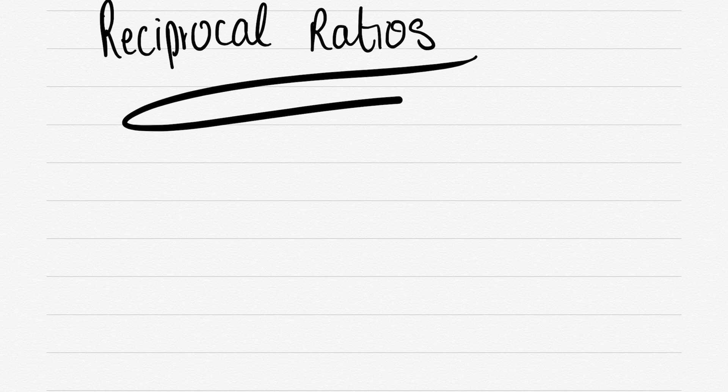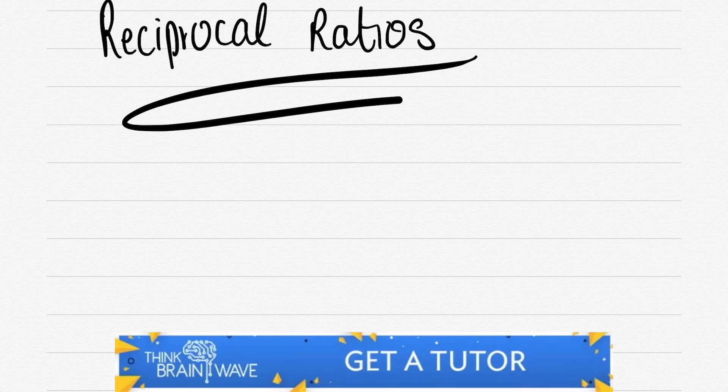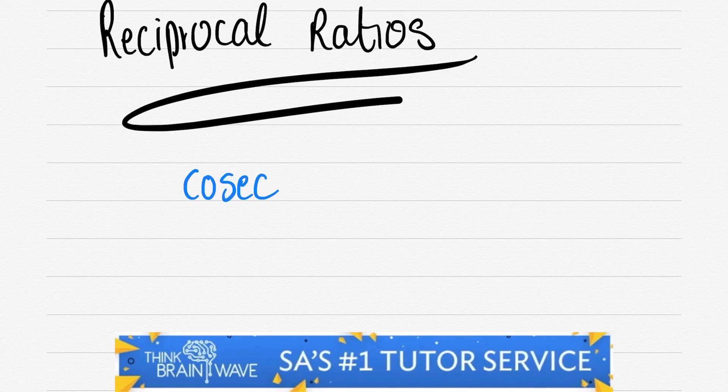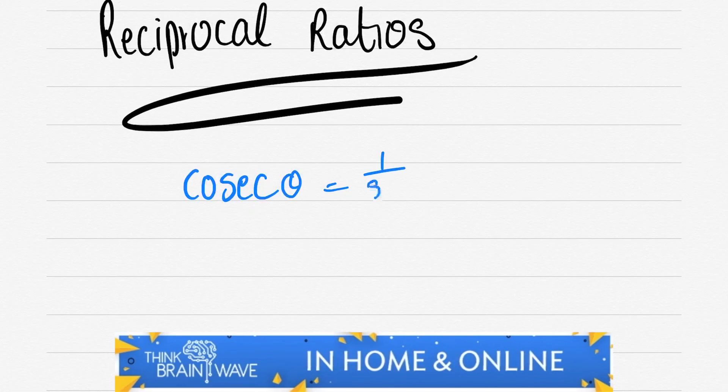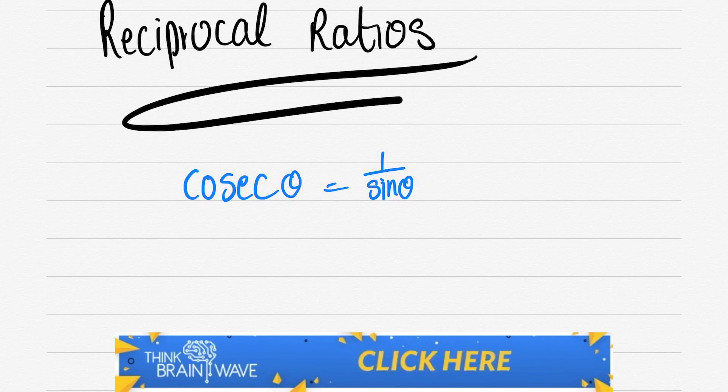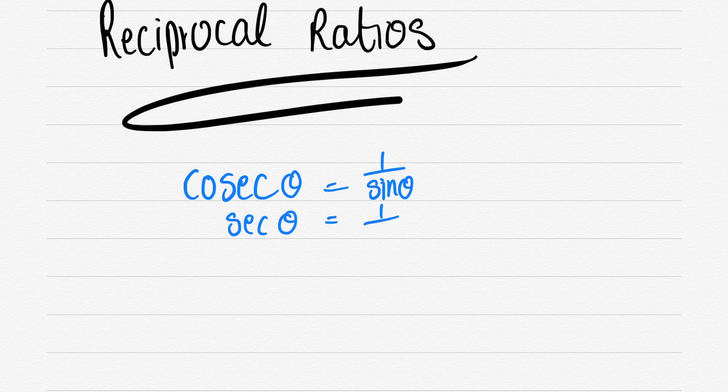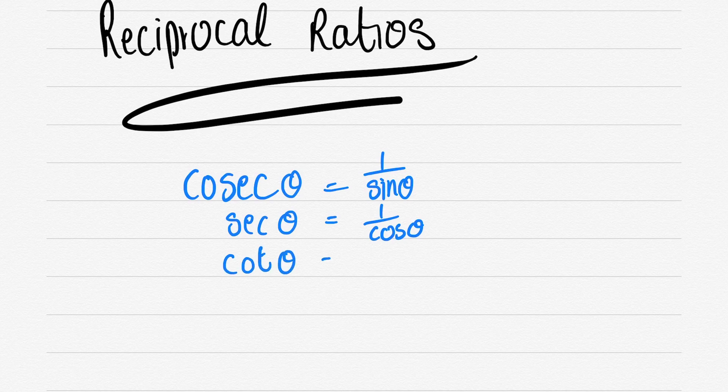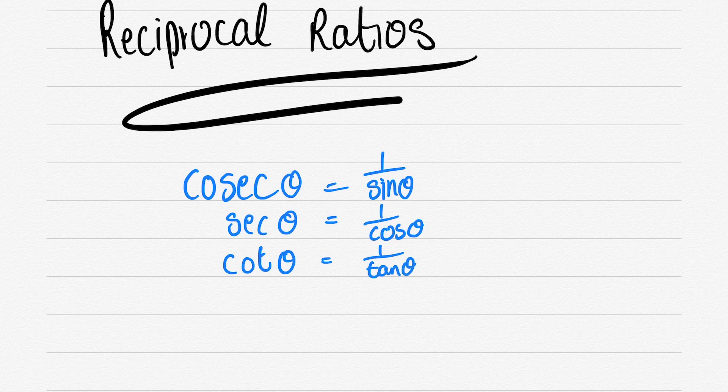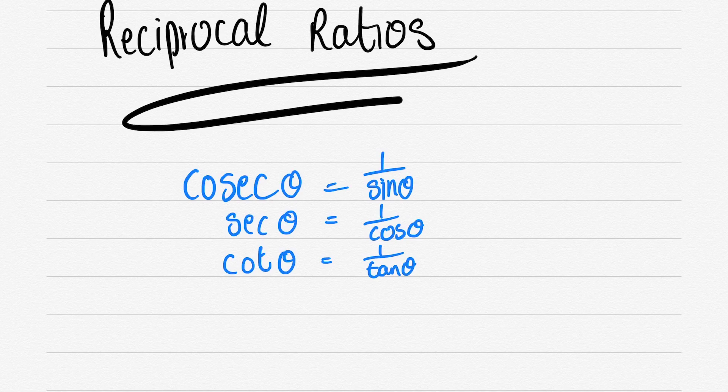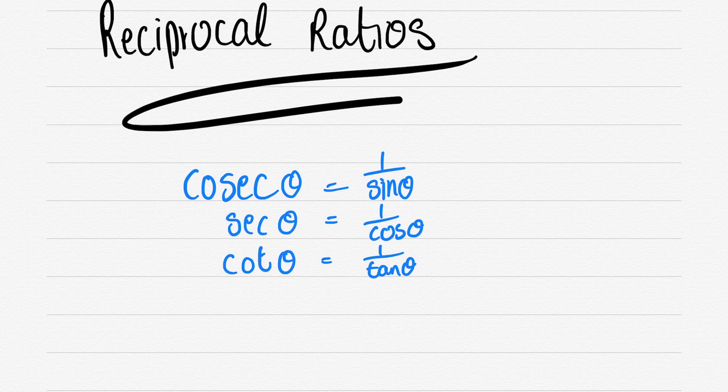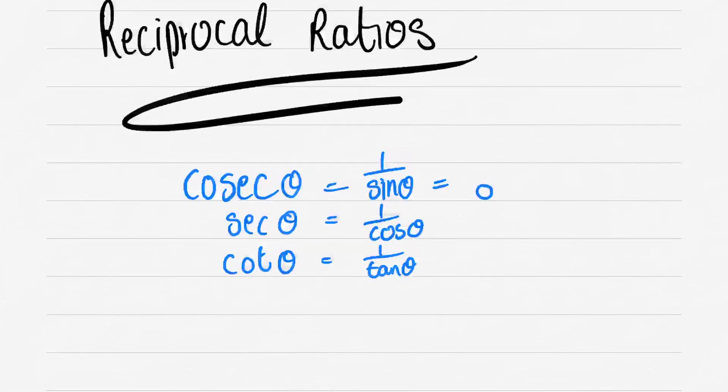Now reciprocal ratios - reciprocal literally means one over. So if you take five and you say one divided by five, that would be the reciprocal of five. Cosec is the reciprocal of sine, so you're literally just taking one over sine and that would be cosec. If ever you get this kind of question in a test, don't stress. Remember what we've done over here. One over sine is cosec, one over cos is sec, and one over tan is cot. It can be confusing at times because you see cosec and you think that must be cos, and sec must be sine. Just remember it's the other way around.